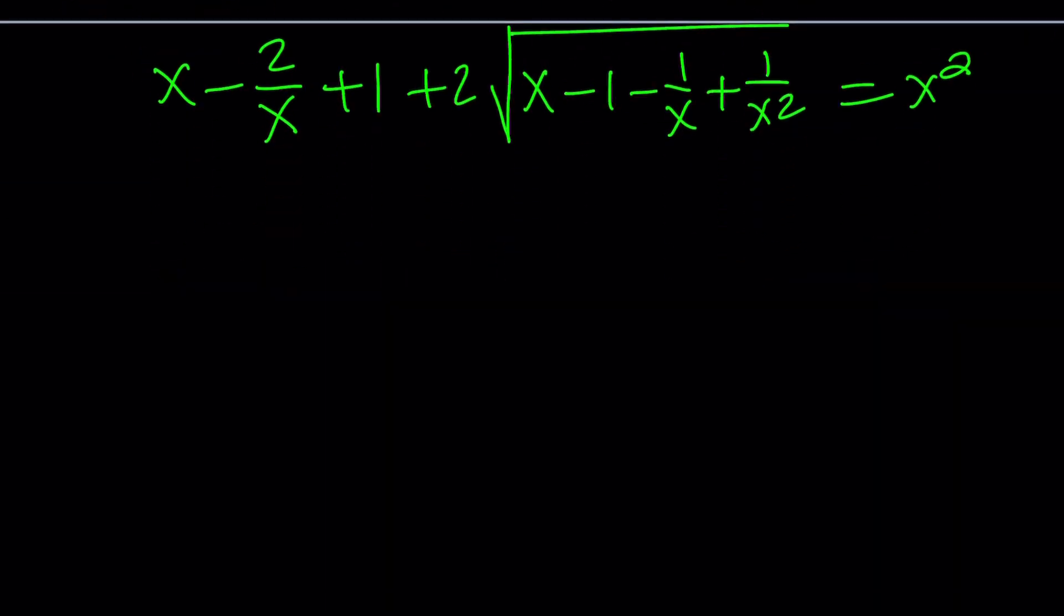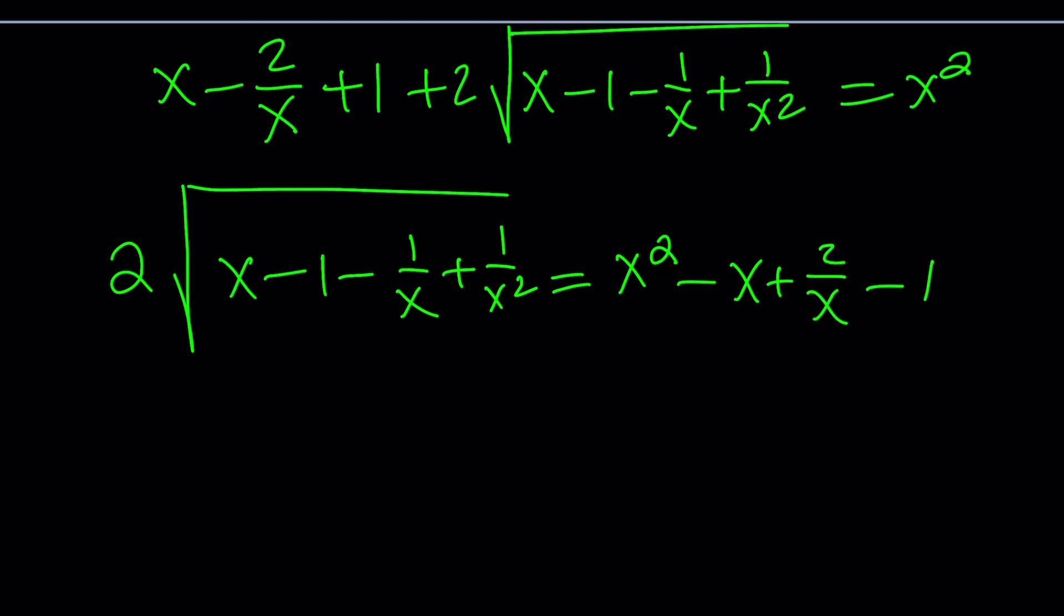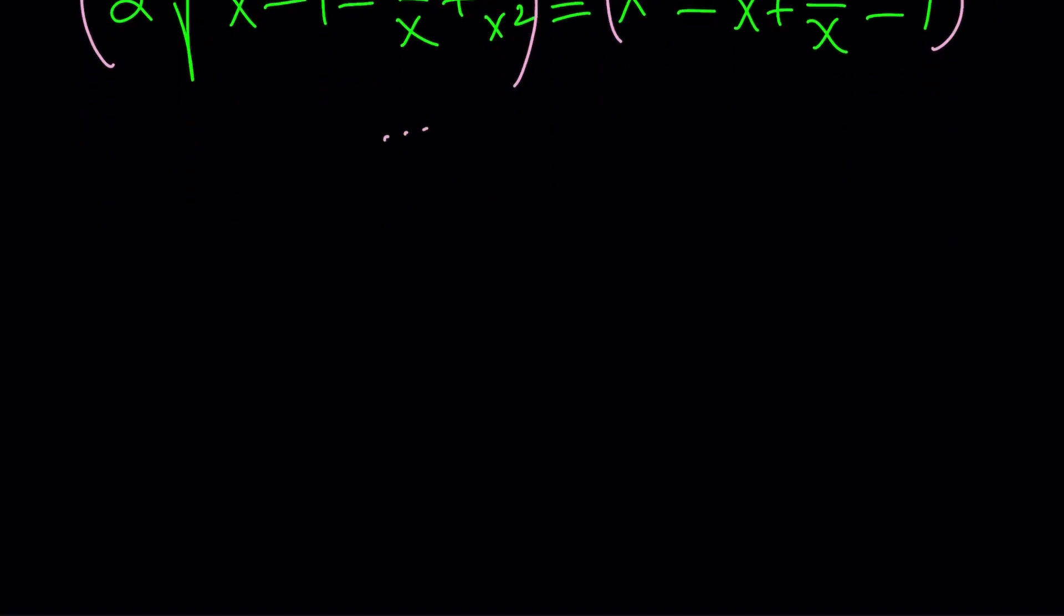Now let's go ahead and isolate the radical. 2 times x minus 1 minus 1 over x plus 1 over x squared inside the radical equals x squared, and then subtract x, add 2 over x and minus 1. And then we're going to square both sides one more time. And when we square, we're going to get a lot of expressions. We're going to get rid of all the radicals, but good luck with solving this equation, right? Obviously, that's going to be very, very painful. Now, there should be a better way, right?